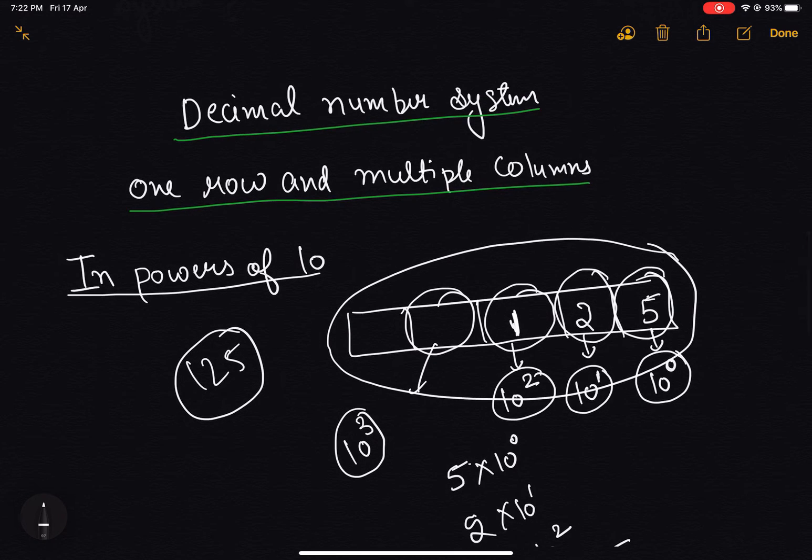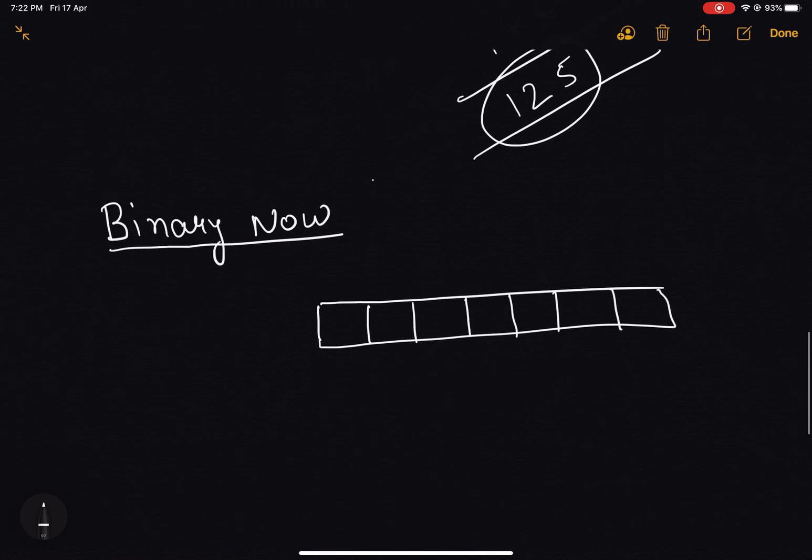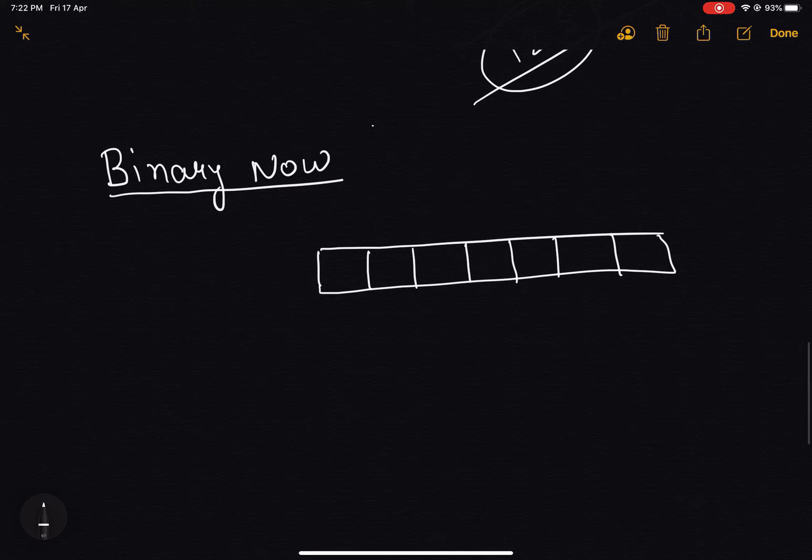Now let's discuss how we can write the same numbers in the binary number system. As we know that in the binary number system, we have only two states, either the electric signal is on or it is off. So we can see it as base 2 number system. Let's say now we have been given a number and that number is 11111101.